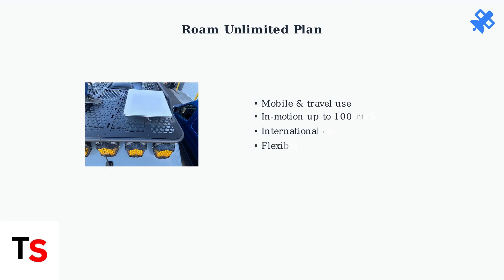Starlink Roam, now called Roam Unlimited, is designed for travelers and mobile users. It offers Internet access across various locations, including in-motion use up to 100 miles per hour and international coverage.